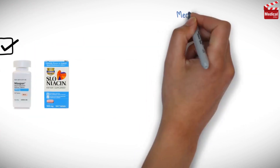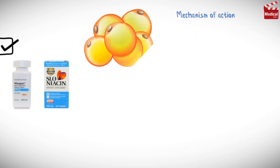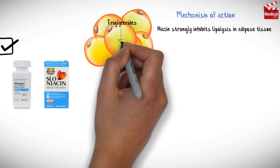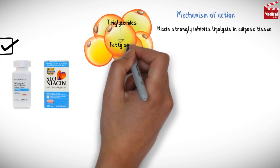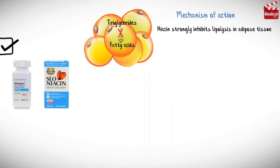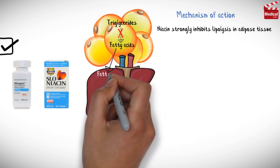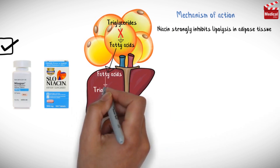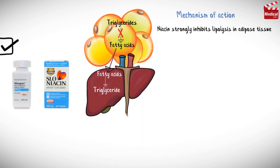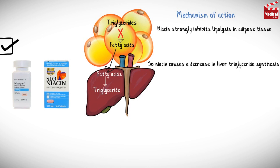First let's talk about the mechanism of action. Niacin strongly inhibits lipolysis in adipose tissue, which is the primary producer of circulating free fatty acids. The liver normally uses these circulating free fatty acids as a major precursor for triglyceride synthesis. So niacin causes a decrease in liver triglyceride synthesis.